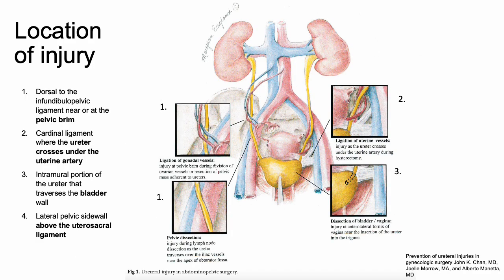There are several locations where the ureter could be injured in a GYN surgery. The first is near the IP, or when we're going to ligate the IP, as shown in this photo. This could also occur during a lymph node dissection, because the ureter is usually seen crossing the external iliac vessels from lateral to medial at the base of the IP or at the bifurcation of the common iliac, as depicted here.